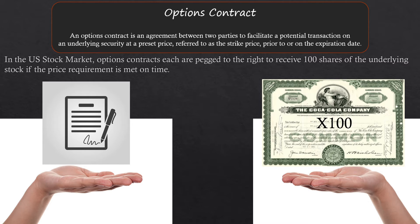So if I buy an options contract for the Coca-Cola Company, I am set to either receive or be denied an opportunity to purchase those Coca-Cola shares at the set price.